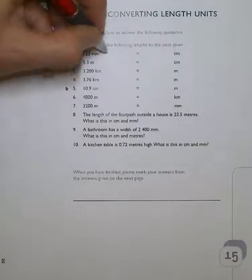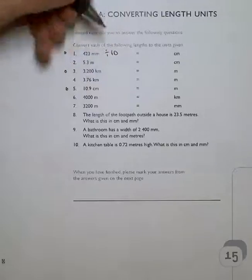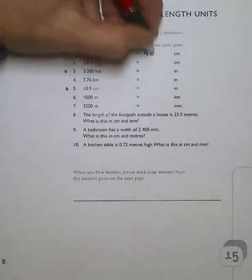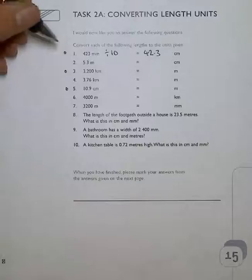So for the first instance, to go from millimeters to centimeters, from thousandths to hundredths, I divide by 10. 42.3 centimeters.